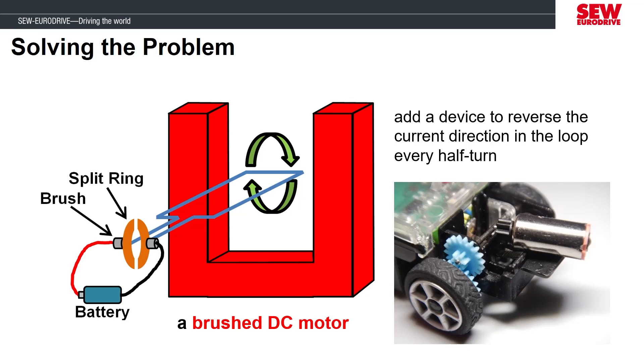This is the basis for a simple brushed DC motor that's really common in toys and battery-operated small electronics. A DC motor is a direct current motor, so the current is always flowing in the same direction out of the power supply. But this type of motor isn't that common in the industrial sector.